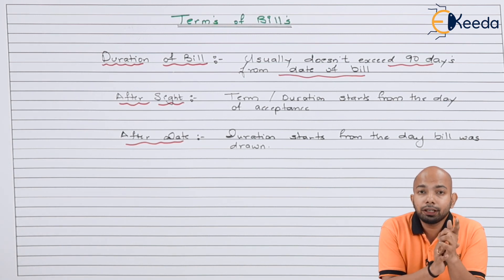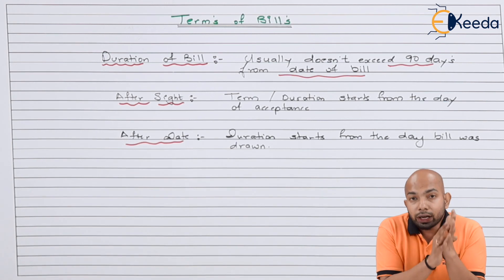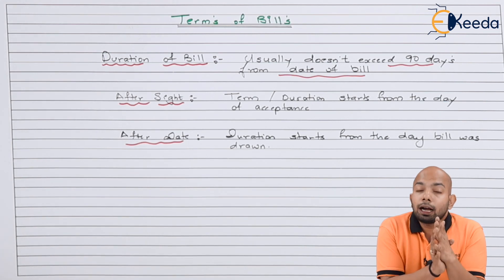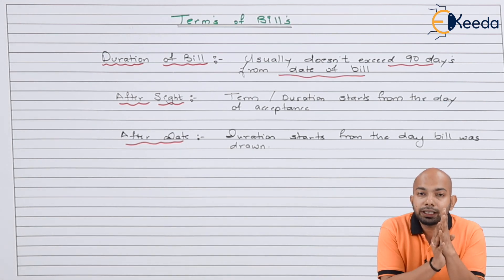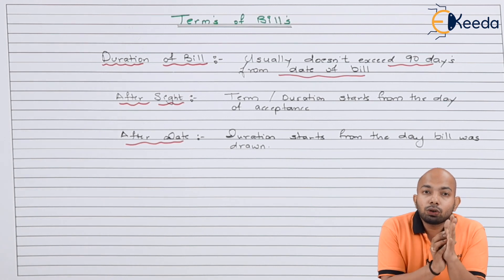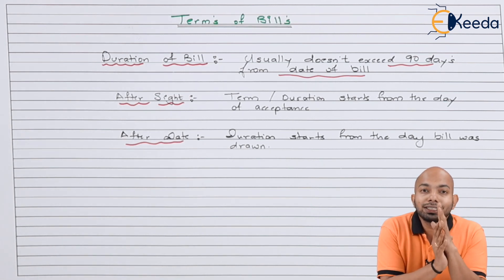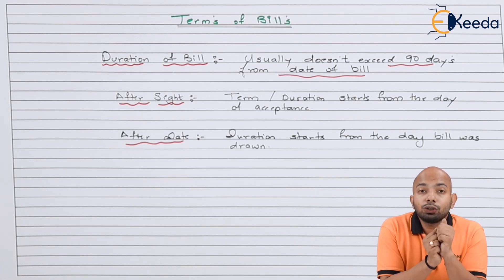To summarize: after sight is related to when acceptance comes into picture — 90 days start from that date. After date is when the bill was first drawn — 90 days start from that date. These are the two key distinctions you need to understand.